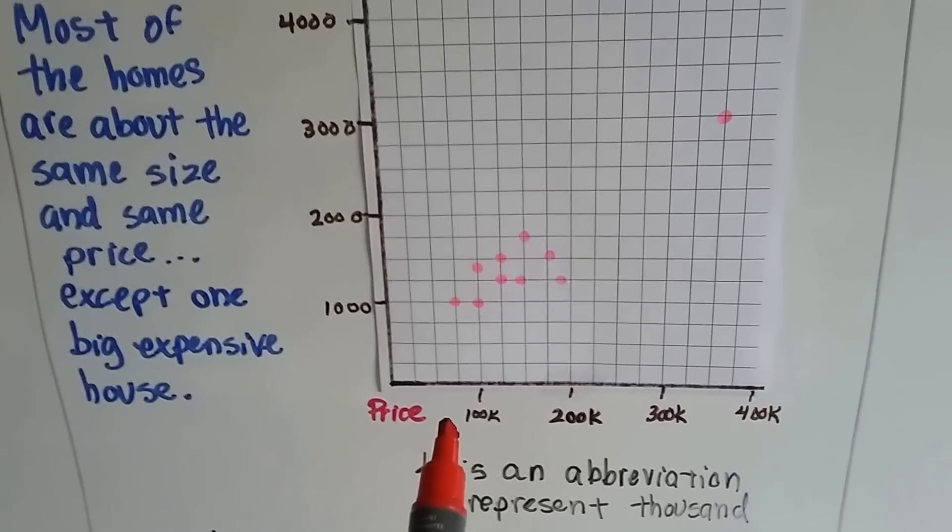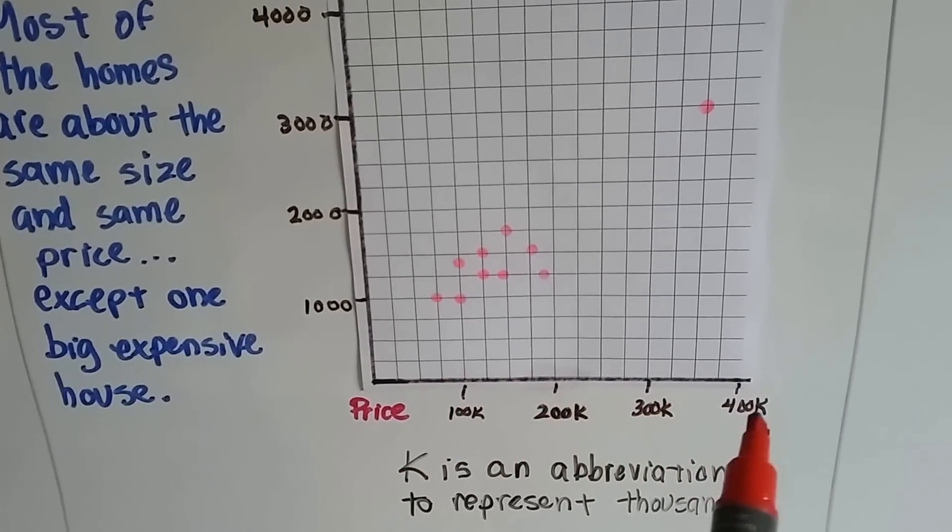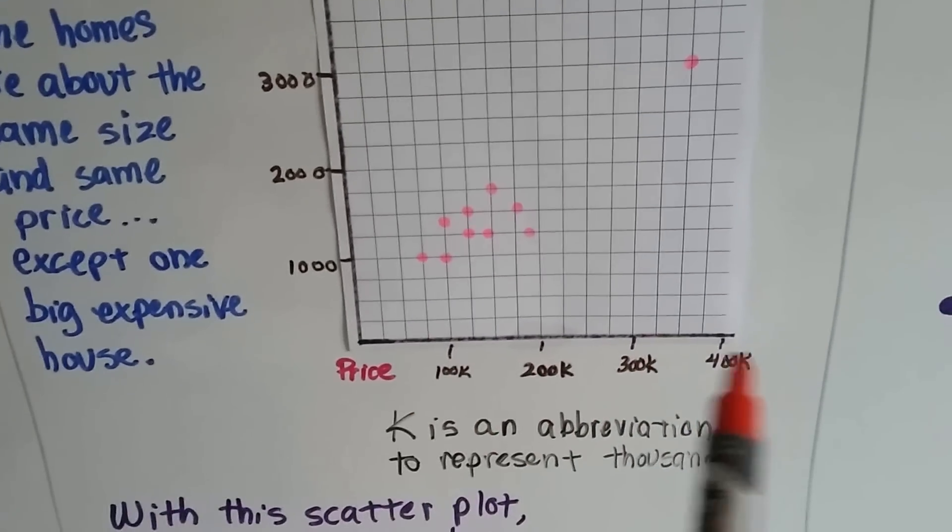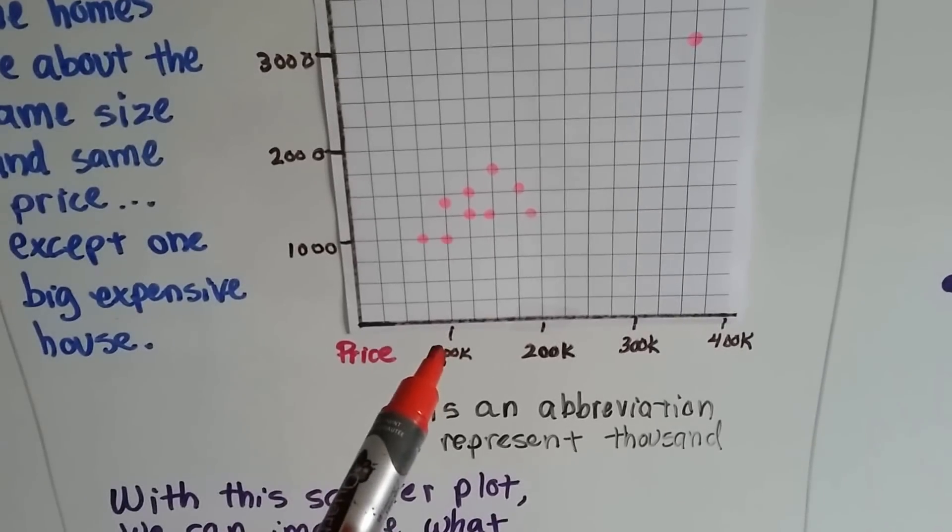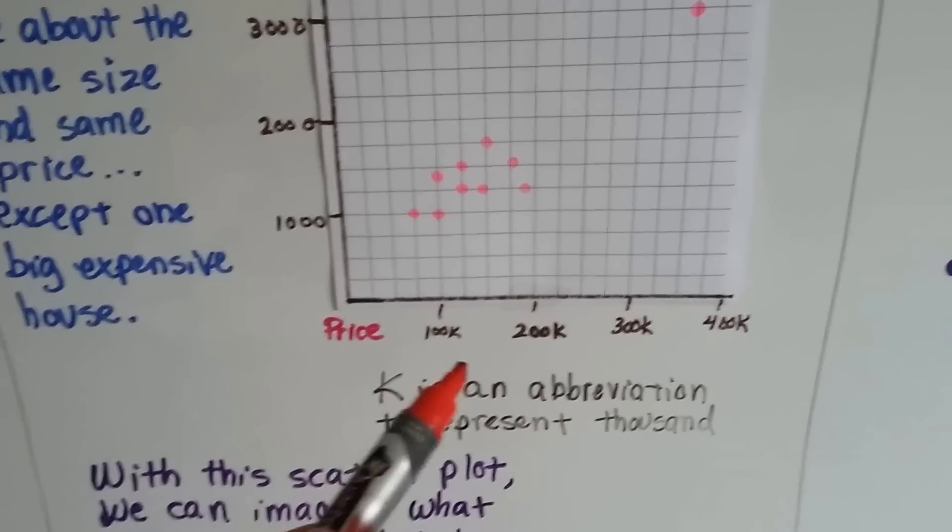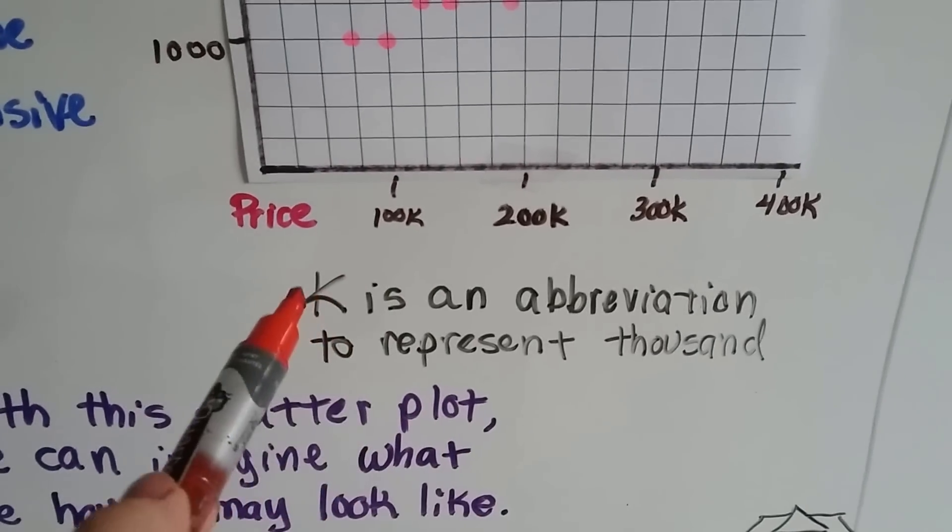And here's the prices. 100,000, 200,000, 300,000, 400,000. Now that's in dollars. So that would be a $100,000 house, a $200,000 house. And see how I have a K here? You're going to see that a lot.